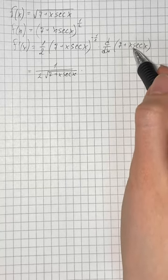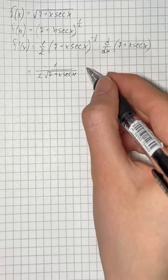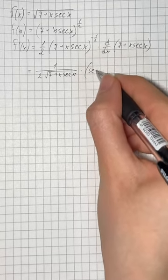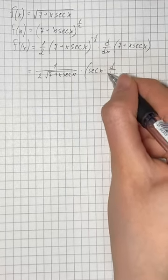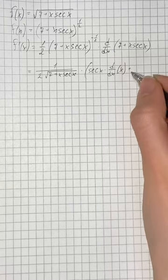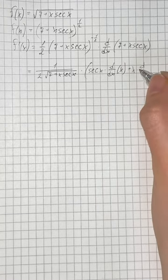And the derivative of x·sec x—here we're going to use the product rule. So we have sec x times the derivative of x, plus x times the derivative of sec x.